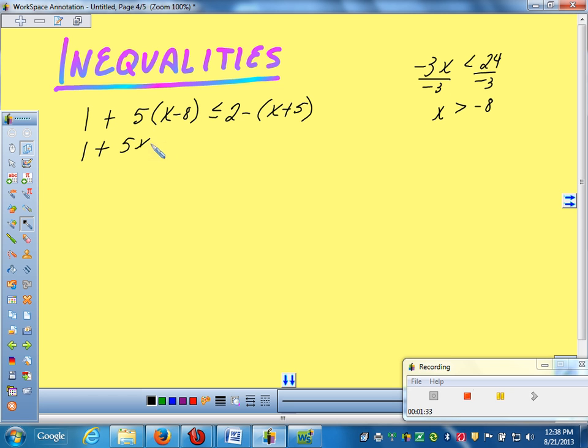So I would have 5x minus 40. What trap is set for you over here on the right hand side? The negative needs to distribute. Yes. Since that negative is outside of quantity, it's got to distribute. So that's minus x and minus 5.